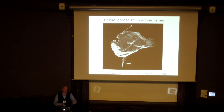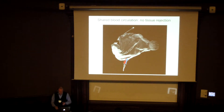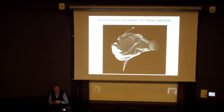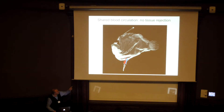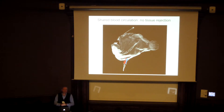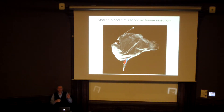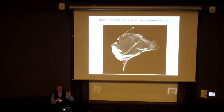The male finds the female, attaches to her, and you might think the two happily live together. But for immunologists the key thing is this: they establish a common blood circulation — parabiosis as a natural means of reproduction. There are so few animals in this deep sea that they have a very difficult time finding a mate, and once found, they attach. If I were to do parabiosis with any randomly picked animal, it probably wouldn't work because of histocompatibility problems. Yet in this case it does work — some females are known to have up to 12 males attached.